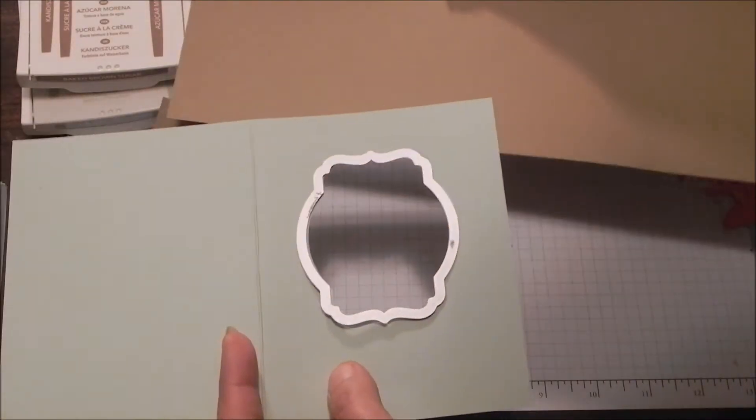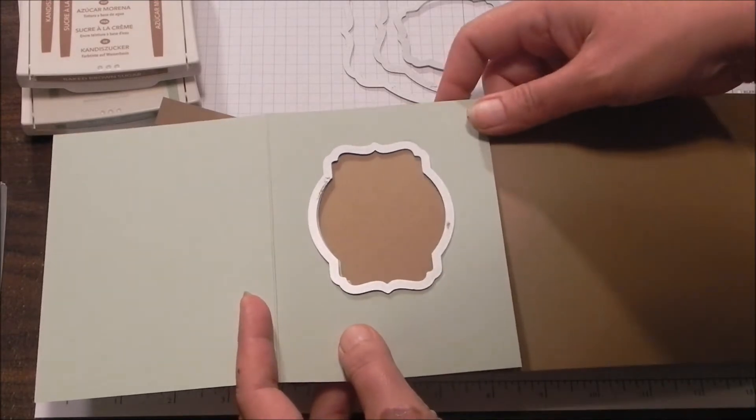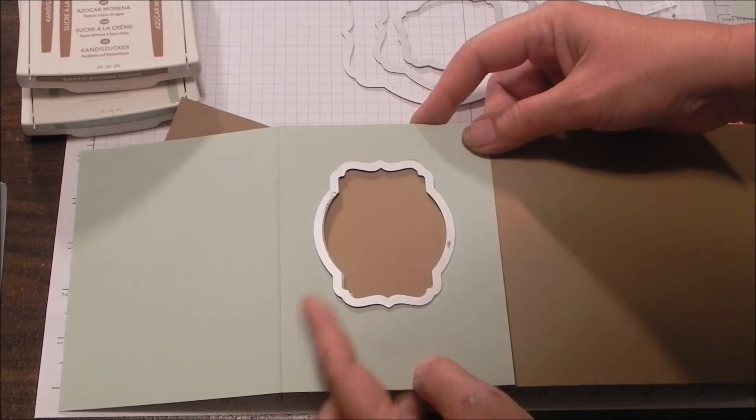Then take a piece of card stock, the color that you want that front panel, place it in the back and the only thing is that you have edge to edge, top to bottom.